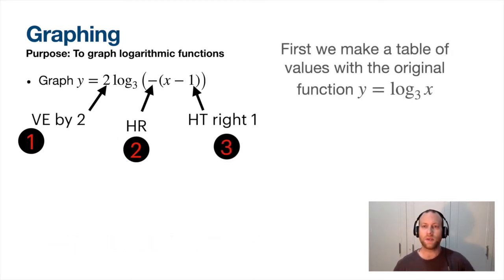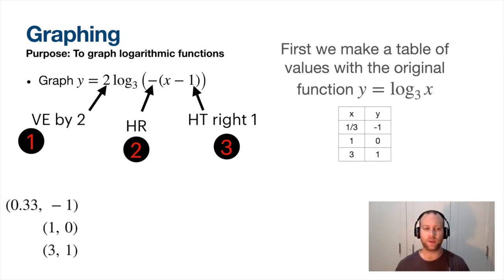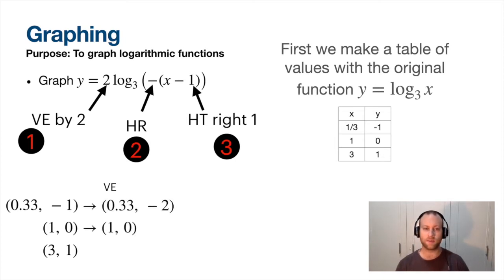First we need to do a table of values of log base 3 of x. Once I do that I can transform it knowing what these transformations are. Here's the table of values for log base 3 of x - pretty straightforward. I wrote 1/3 as a decimal because I didn't want to write 1/3 every time, but that's a rounded decimal - it's really 0.3 repeating. Then applying a vertical expansion by 2 to each of these points, take the y value and multiply it by 2.